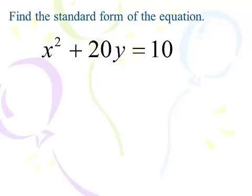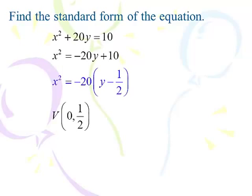This one is easier to get into standard form — we don't need to complete the square because we have x squared with no other X term. I subtract 20Y from both sides and factor the right side. Factoring out -20, I get -20(Y - 1/2), since 10 divided by -20 is -1/2. So the vertex is at (0, 1/2).